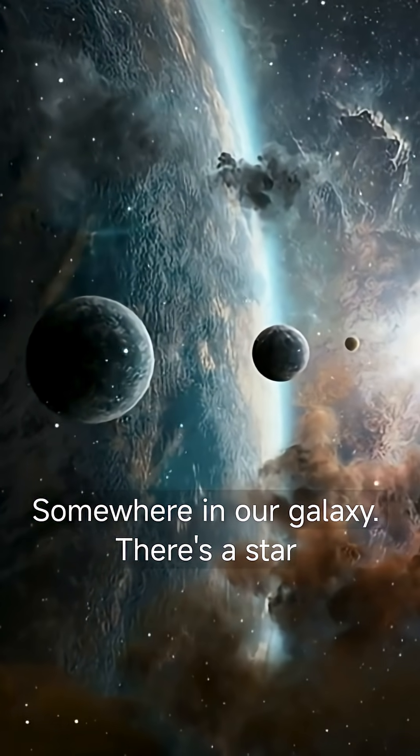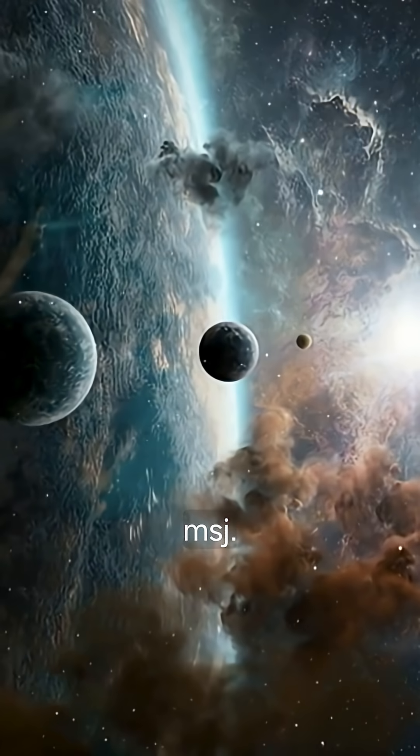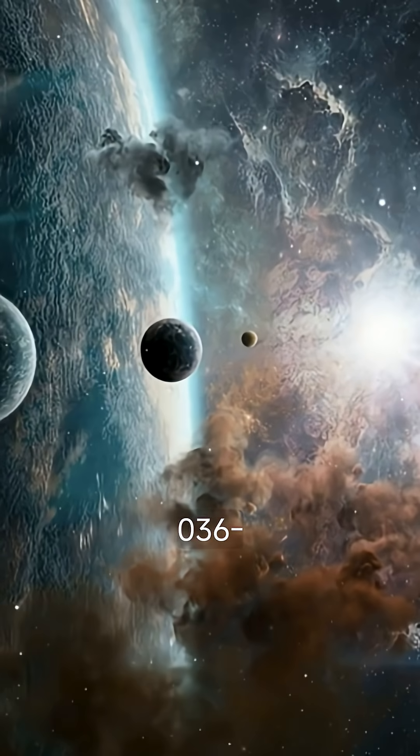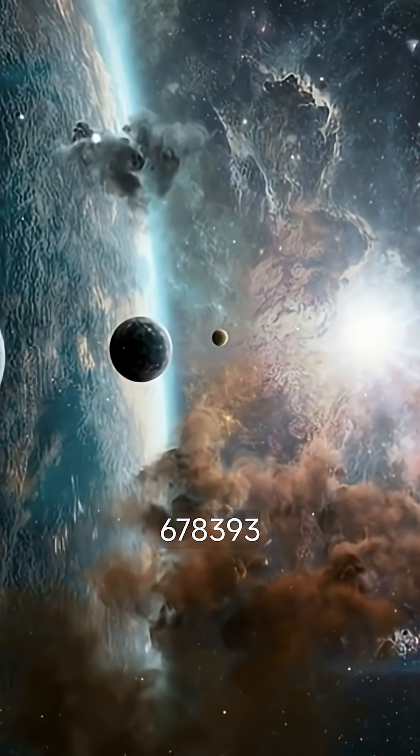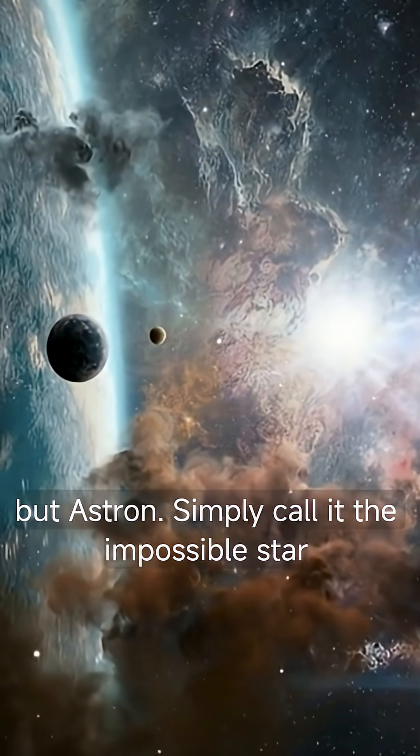Somewhere in our galaxy, there's a star that shouldn't exist. Its name is SMSS J031300.36-670839.3, but astronomers simply call it the impossible star.